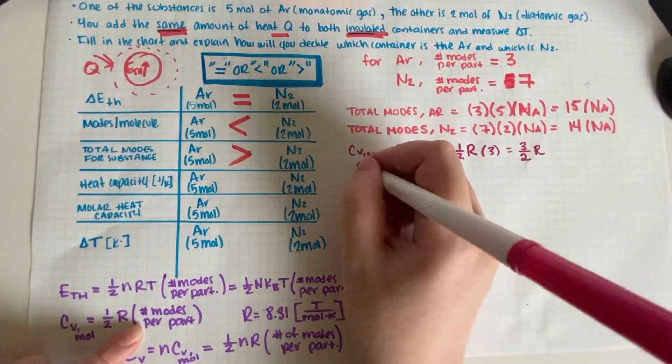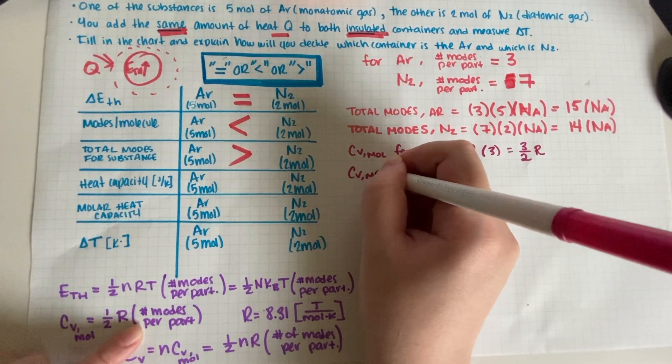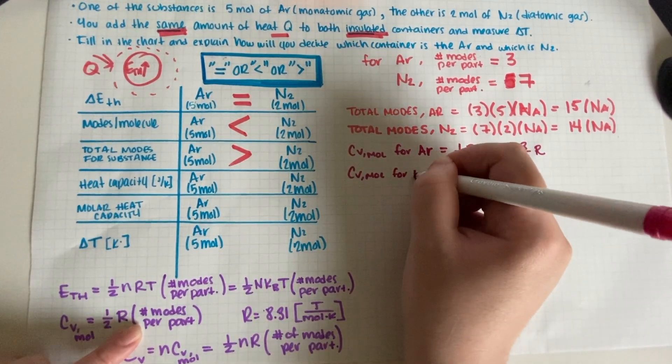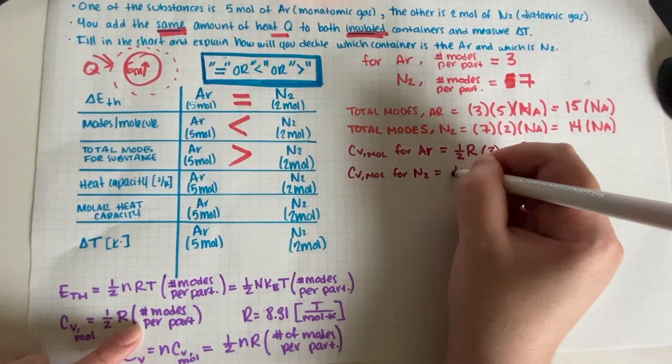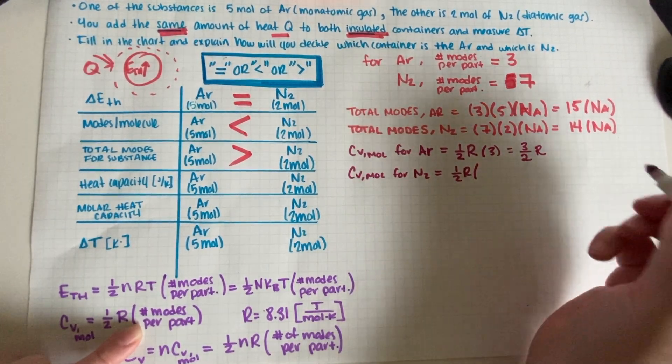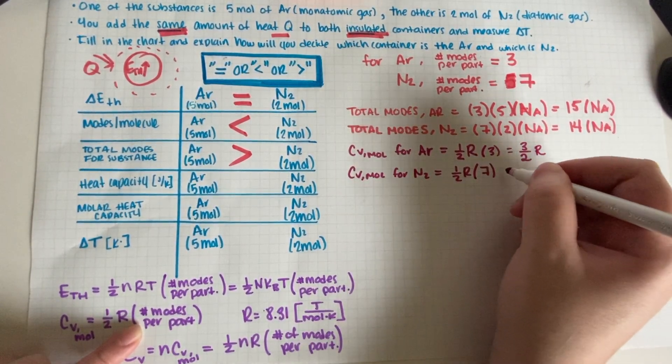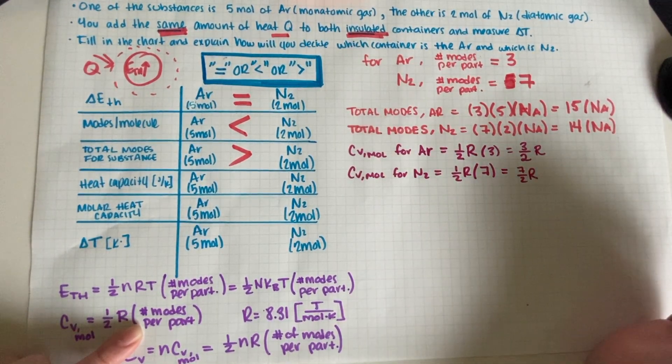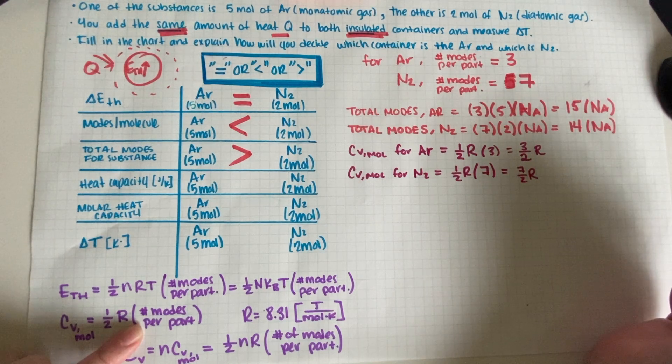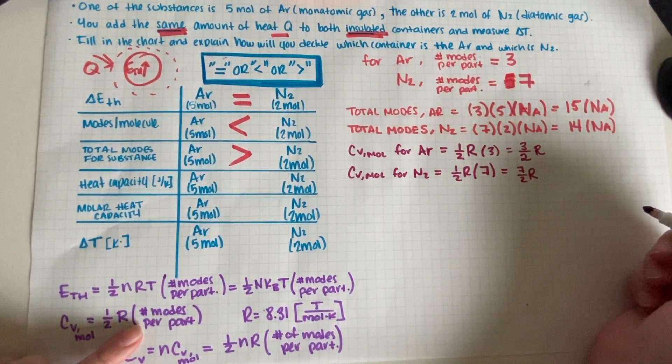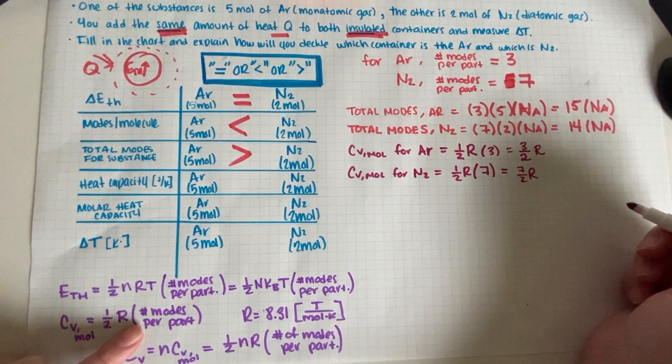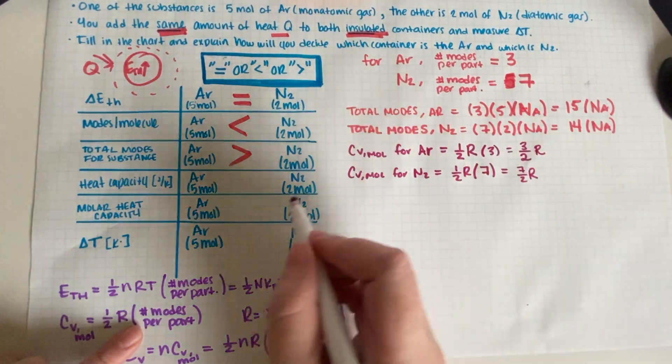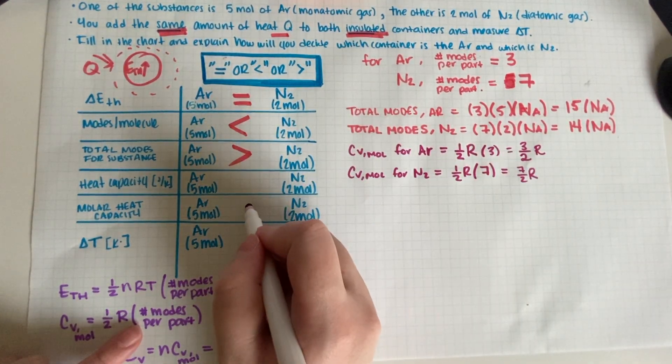And then cv little c for N2, this is one half r but we're gonna use seven, so this is seven halves r. So seven halves is obviously greater than three halves. Therefore in terms of little c, this one is the winner.